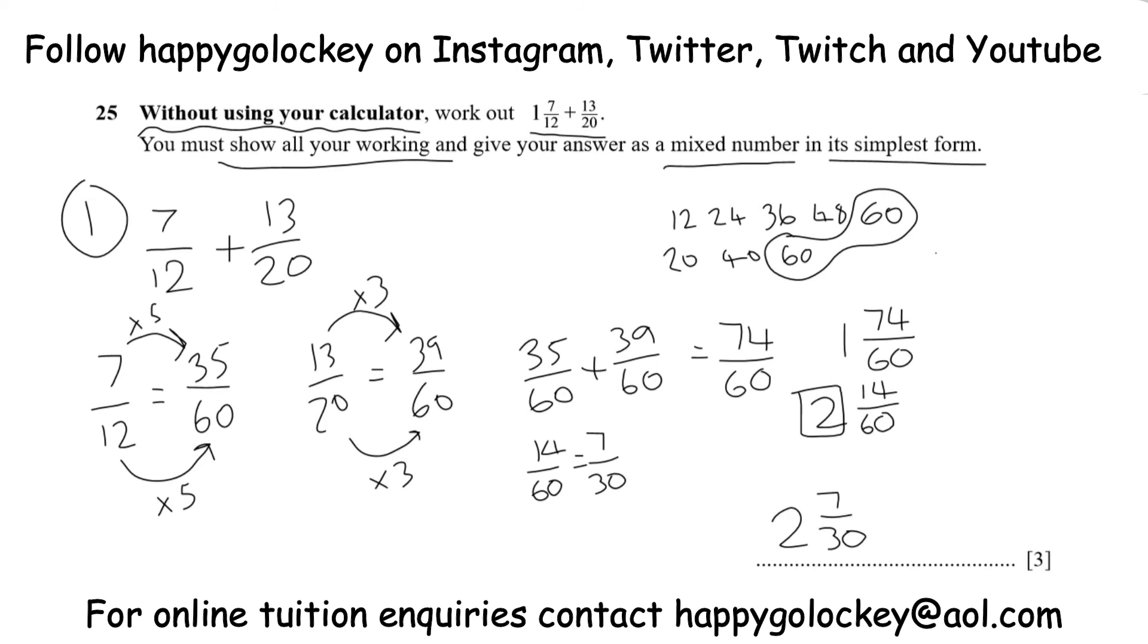Okay, so that question was worth 3 marks. You would have got 1 mark just for finding that common denominator of 60. You would have got the second mark for getting to this point, showing both numbers over 60 and how to add them together. And the third and final mark would have come from getting the answer, 2 and 7 30ths, simplified.